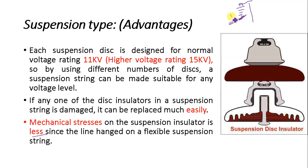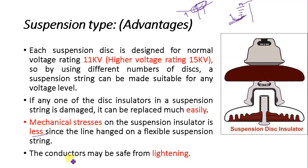A third advantage is that mechanical stress on a suspension insulator is less because the lines are hung on a flexible suspension string. When heavy wind conditions occur, the conductor oscillates and the insulator string oscillates with it, so no significant mechanical stress is imposed on the insulator. In contrast, a pin type insulator is rigidly fixed to the tower and must bear the full mechanical stress from the conductor under high wind. Additionally, conductors in suspension type arrangements may be safer from lightning because the conductor hangs well below the peak of the tower.